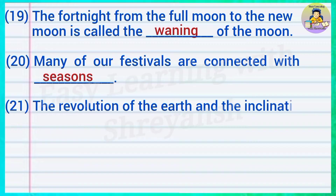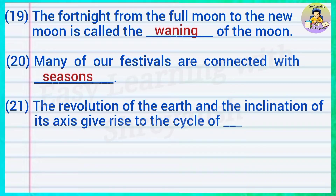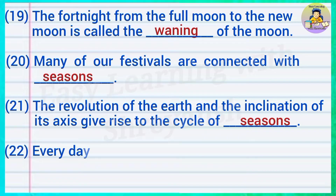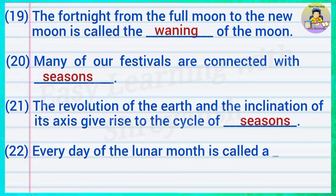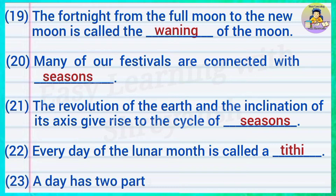Twenty-one — the revolution of the earth and the inclination of its axis give rise to the cycle of — answer: seasons. Twenty-two — every day of the lunar month is called — answer: tithi. Twenty-three — a day has two parts: day and — answer: night.